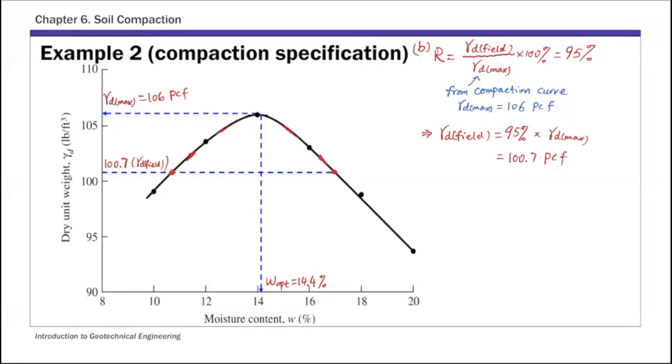That means if your moisture content stays within this range, your gamma d is going to be higher than this 100.7 value, higher than that 95% compaction. Therefore, the range of corresponding moisture content is basically the range between these two limits. So you can read these two values from the curve. So this value here is about 10.8, and then the upper bound is 16.7.